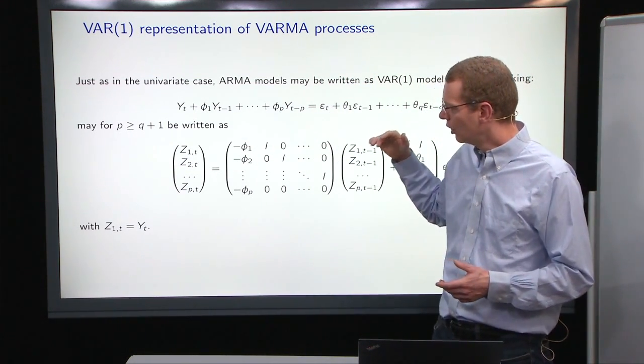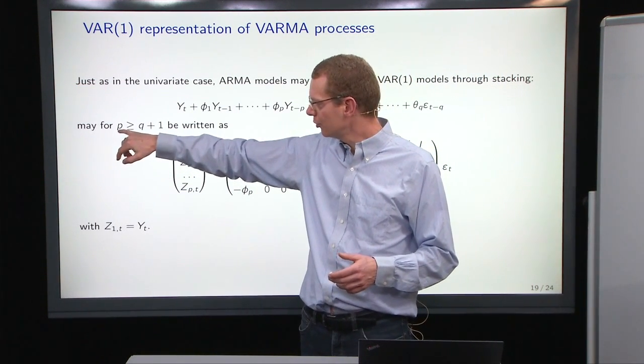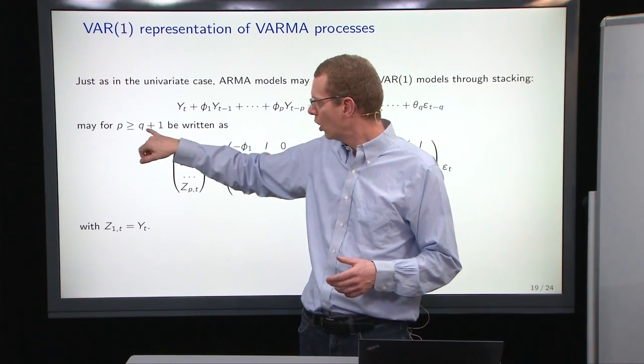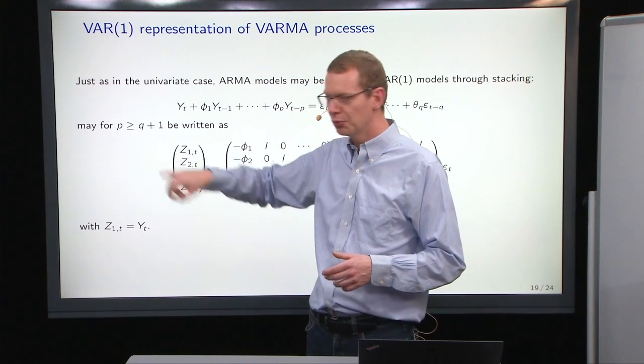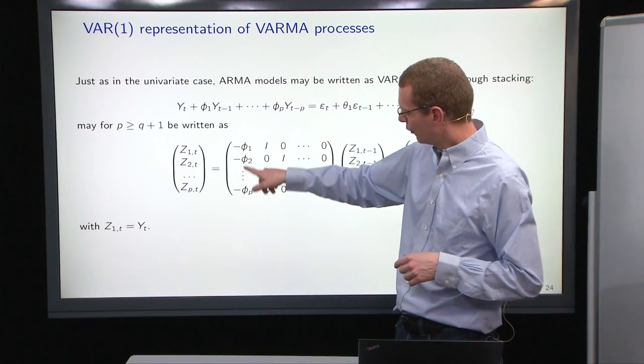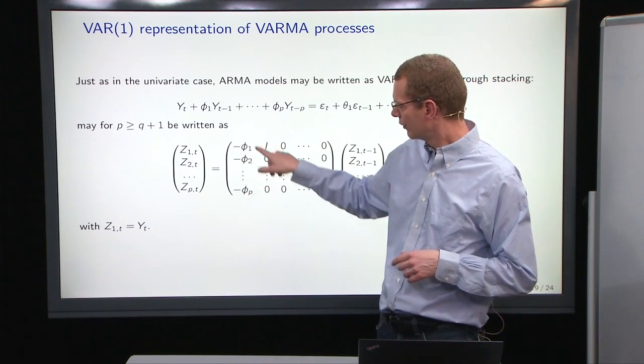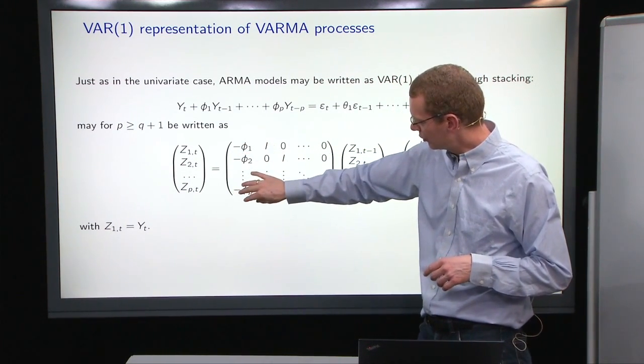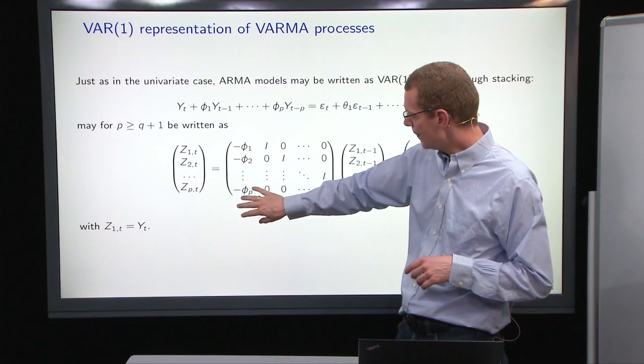So, the generic model, basically you need the order to be P, the maximum of P and Q plus one. Why that? Well, the first column here are coefficients. Those are the matrix coefficients for the AR part.